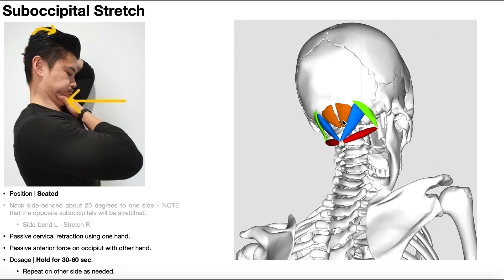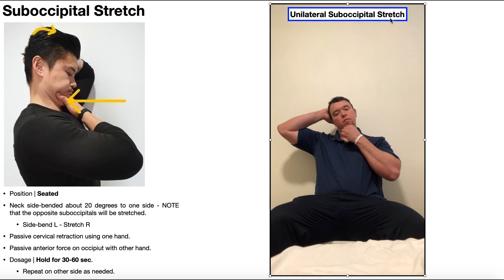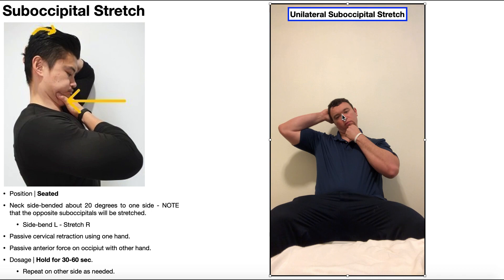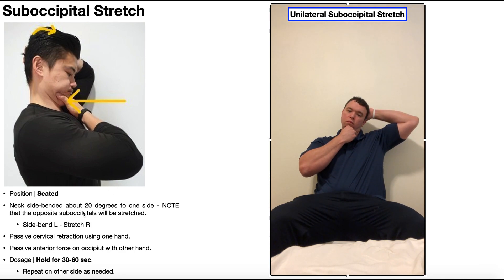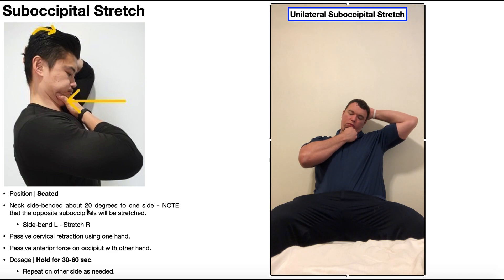For the ones that don't feel it at all, they may need a slight progression — the unilateral suboccipital stretch — where we bias either the left side or the right side to stretch. This is performed identically except for one big difference: the neck is now side bended to one side. In this case, I have my neck side bended to my right. That side bending only needs to be about 10 to 30 degrees — I'm showing about 20 degrees here. It really depends on the individual where they feel the stretch the most; you don't need to side bend all the way.